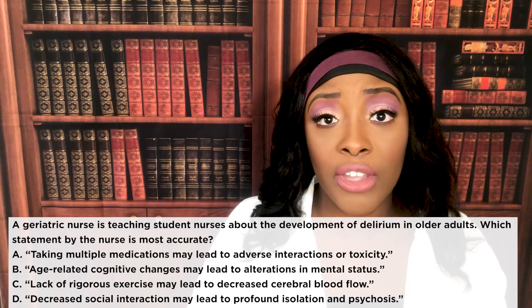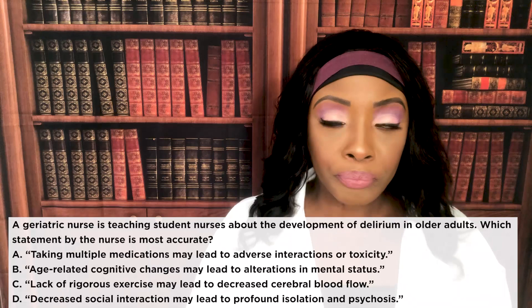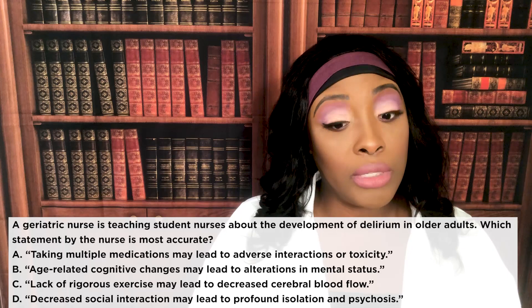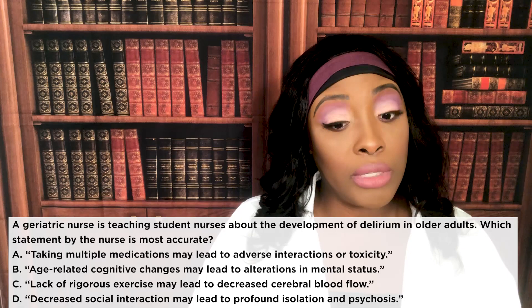Imagine an elderly patient taking a whole bunch of medications — it's very easy for them to get a toxic buildup, and that will cause delirium. Other causes include infection — in fact, acute confusion in an older patient should have you immediately thinking about a possible infection — as well as illness and fluid and electrolyte imbalance. All of those can increase the risk of delirium, not dementia.